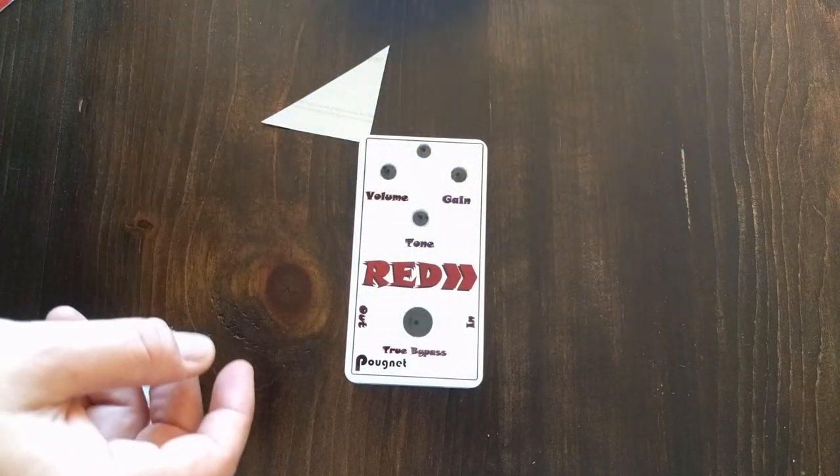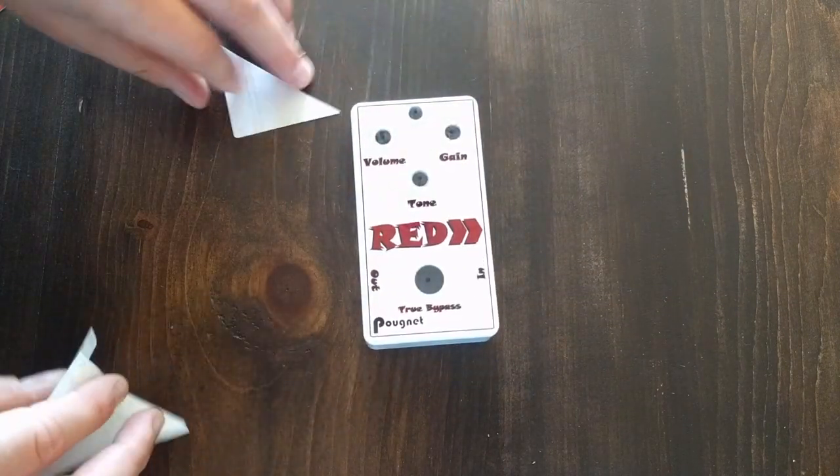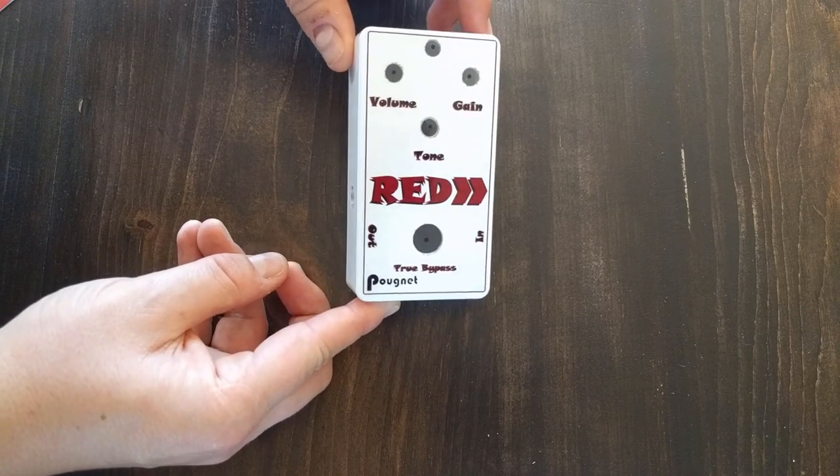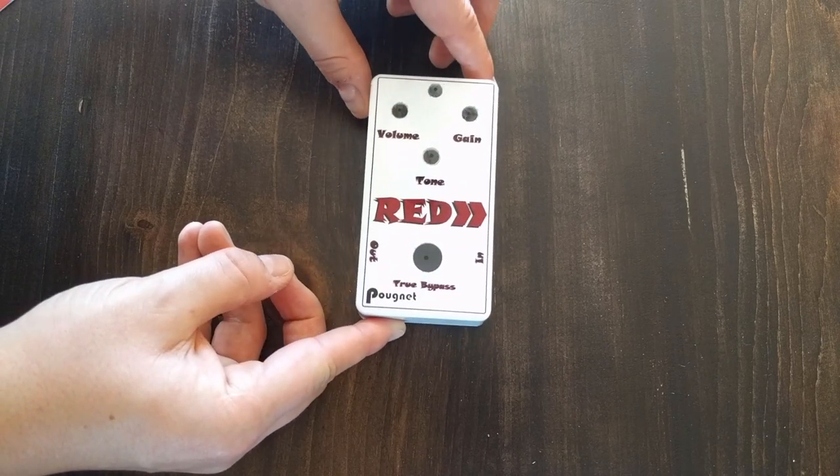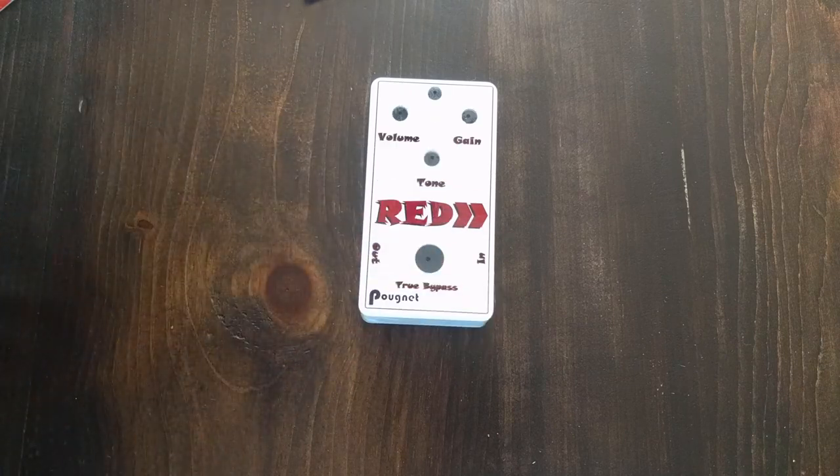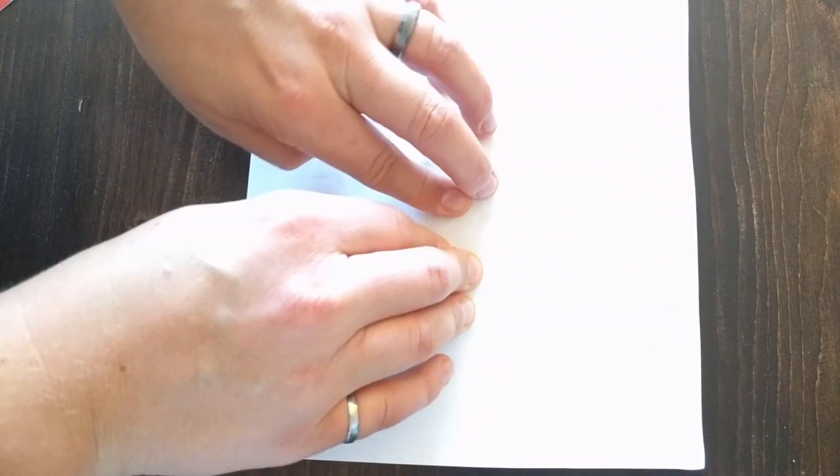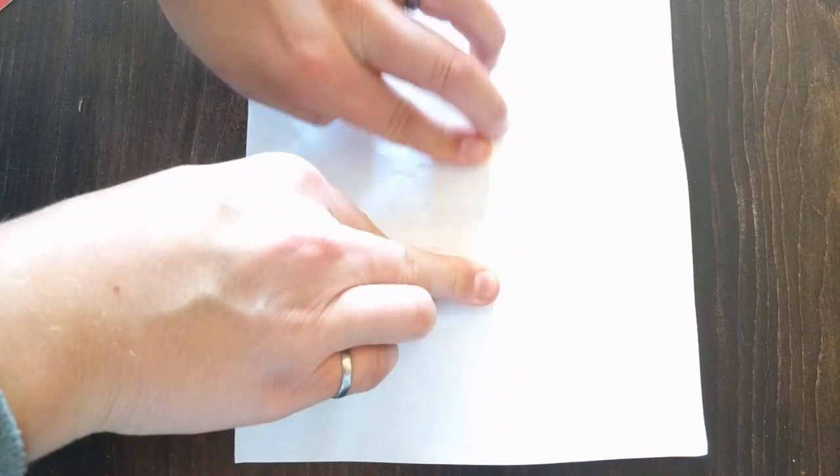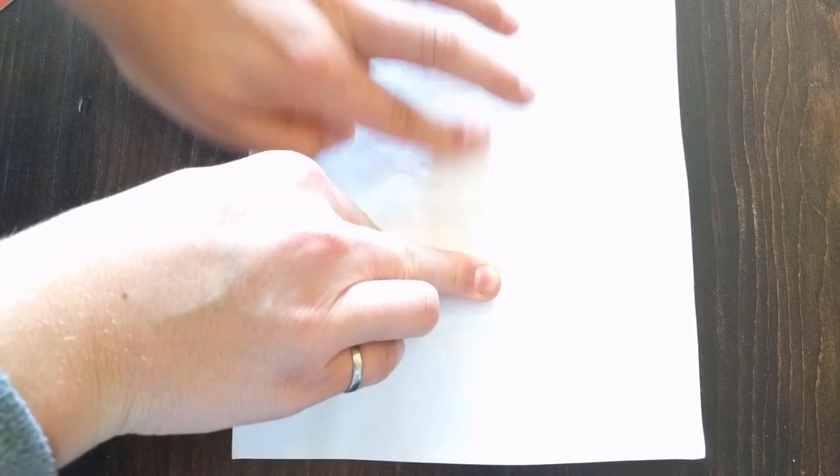Okay. So now the sticker's on. I'm not sure if you can pick it up in the video right now, but there's little bubbles underneath. Nothing too major, it just means everything's got to be pressed down. So I'm going to use the same process with the plain paper, and I'm just going to use my fingers and try to press out all those little bubbles to get it stuck properly to the enclosure top.